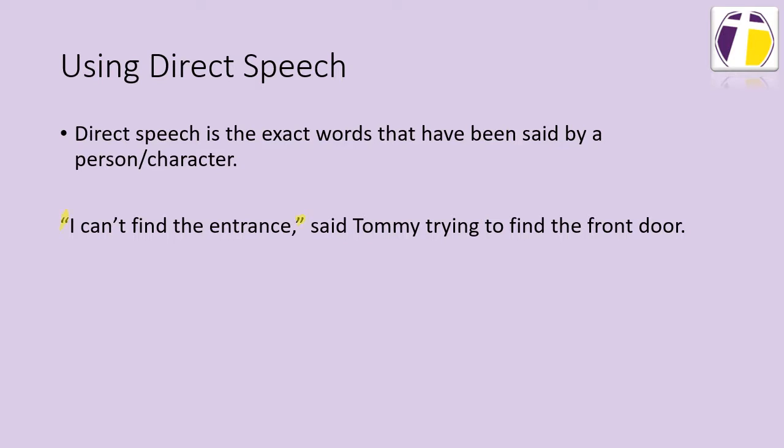So we know that Tommy said, 'I can't find the entrance,' said Tommy trying to find the door. Now there are some key things we must remember when using direct speech. We must have a 66 at the beginning of the speech of what a character is saying, and a 99 when they stop talking. We must have a capital letter for the first word or first letter of the word in the speech. And we must have a piece of punctuation, whether it's a comma, an exclamation mark, or a question mark. And then at the end of the sentence, we must have a full stop.